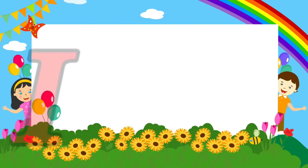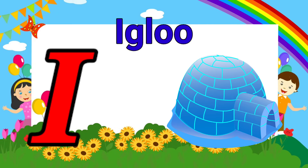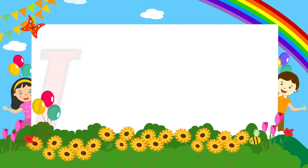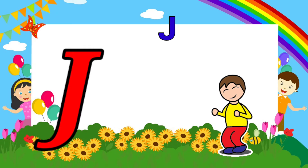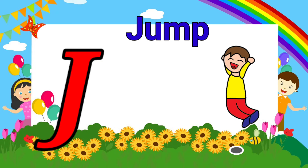I is for igloo, i-i-igloo. J is for jump, j-j-jump.